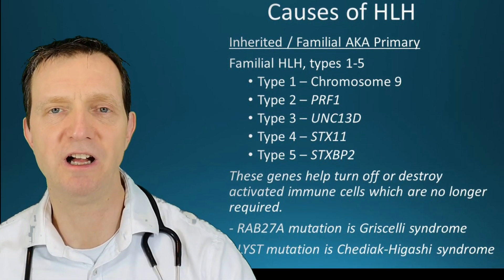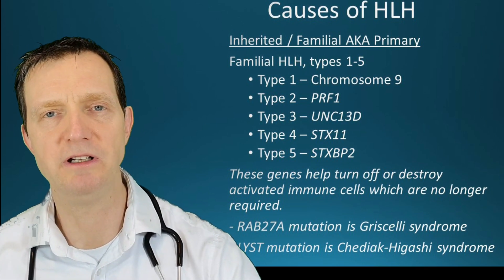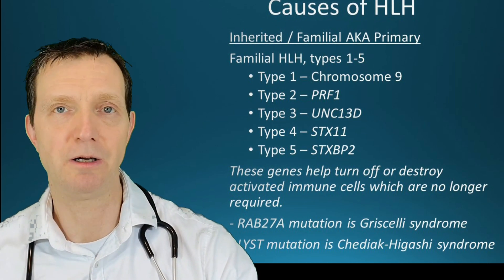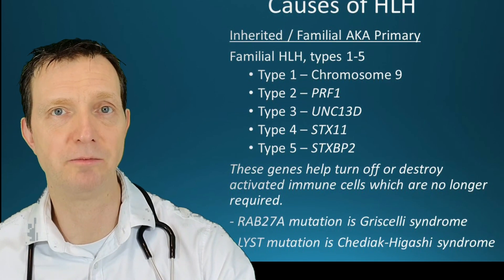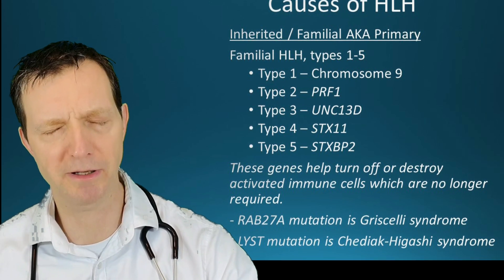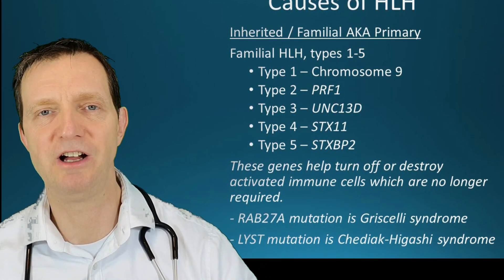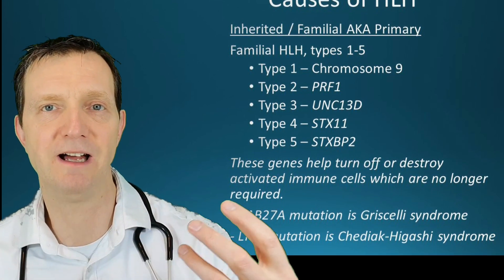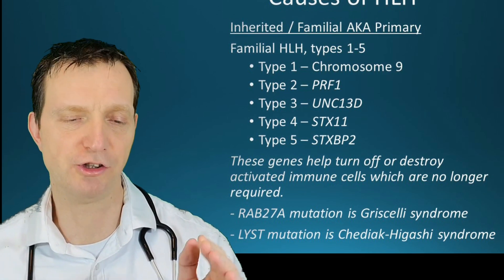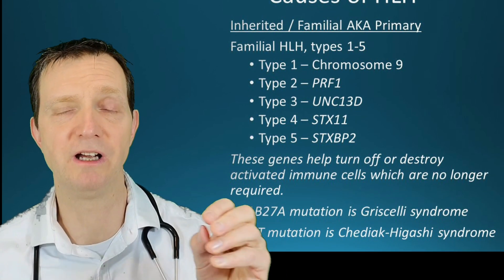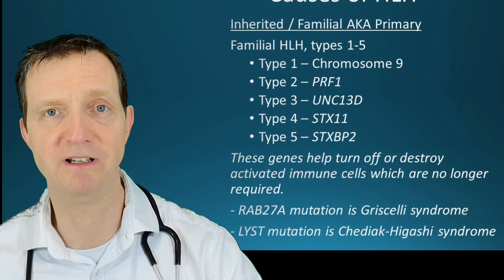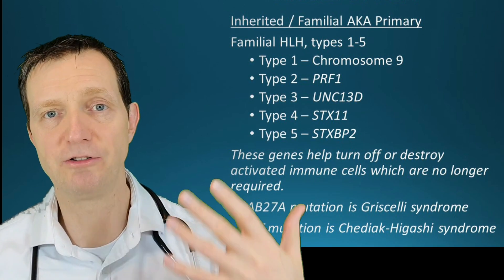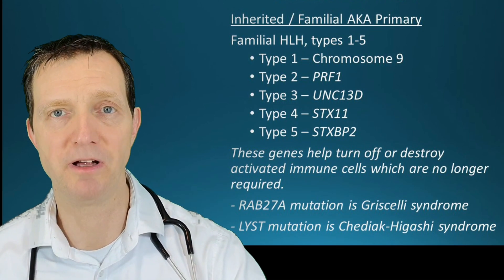Type 1 is cytochrome 9, type 2 is PRF1, type 3 is UNC13D, type 4 is STX11, and type 5 is STXBP2. These genes in theory turn off and allow active immune cells that are no longer required to be destroyed. But if those genes are inhibited, the immune cells start getting overrun and begin attacking parts of the body.